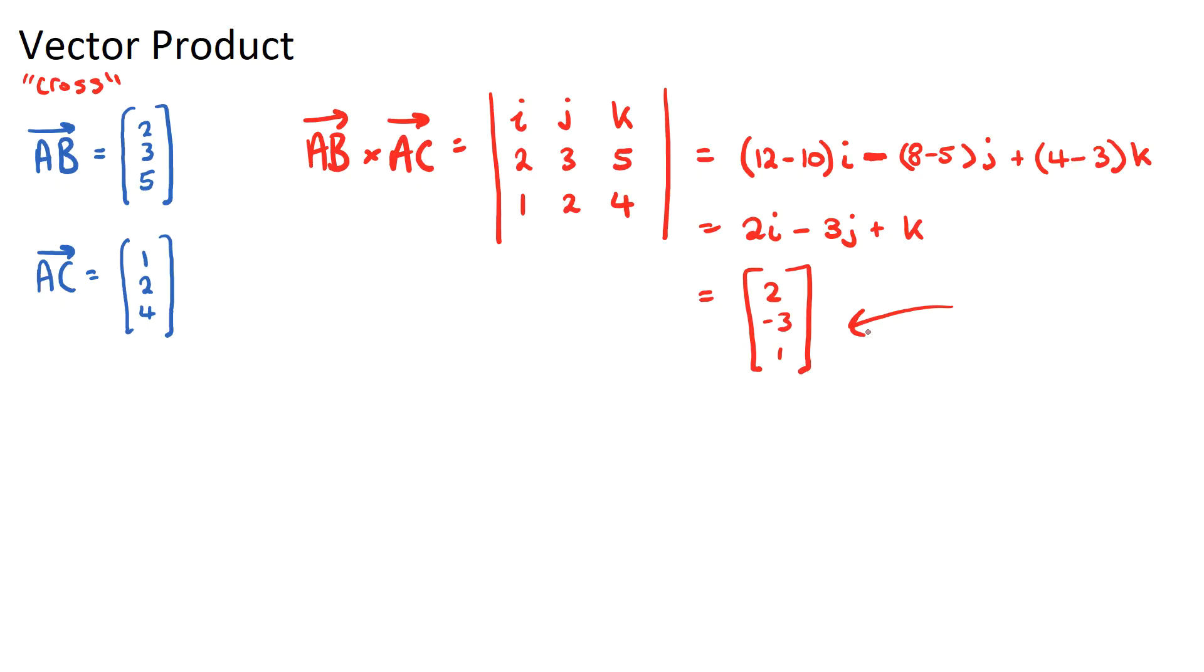Now, you may have seen in your textbook, or your teacher may have referred to the right-hand rule. What the right-hand rule says is that if we have two vectors, for example, what we have here, AB, where this is point A, this is point B, and this is point A, this is point C.